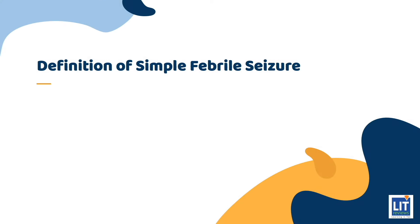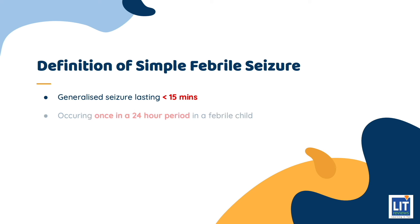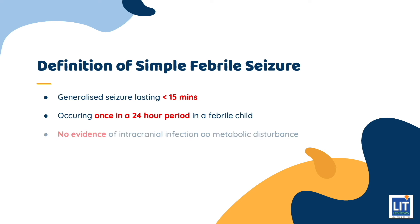Multiple definitions of a simple febrile seizure have been put forth by various organizations. For the purpose of this presentation, I will use the definition of the 2008 AAP practice guidelines for the long-term management of patients with febrile seizures. Febrile seizures are generalized seizures that last for fewer than 15 minutes and occur only once in a 24-hour period in a febrile child with a temperature greater than 38 degrees Celsius. There can be no evidence of intracranial infection or metabolic disturbance, and the child must not have a history of seizures when afebrile.